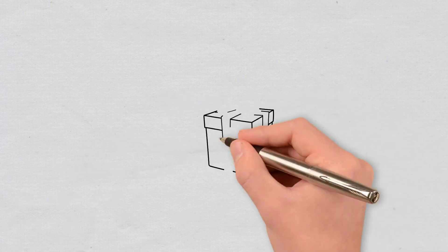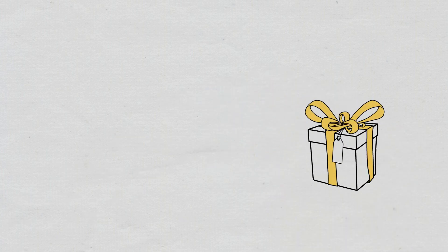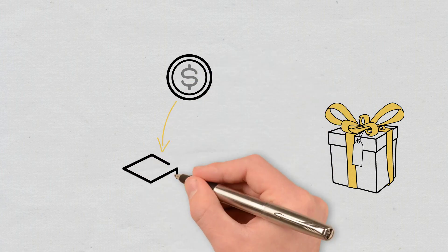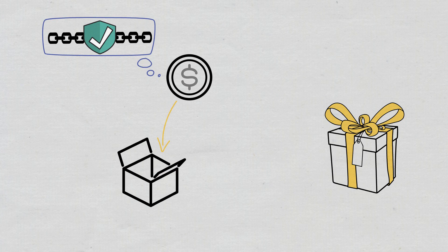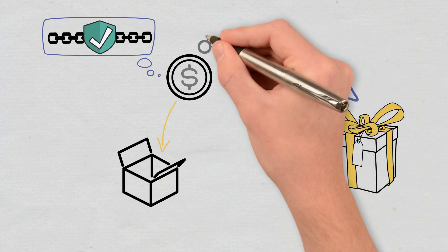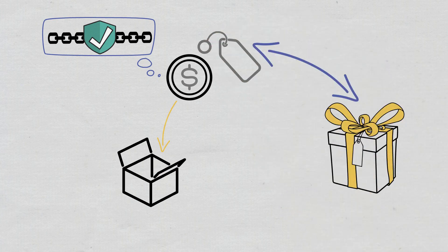A wrapped token is a tokenized version of another cryptocurrency that natively lives on a different blockchain. It is pegged to the value of the original token. Typically, it can be redeemed, unwrapped, at any time.